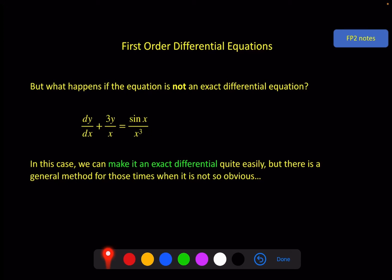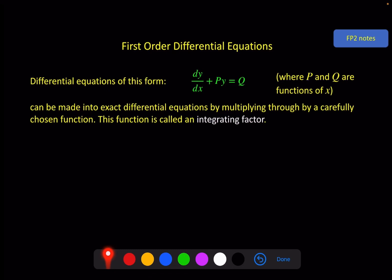You might be able to make it into an exact differential equation, though they won't all be this easy. What if it's not so obvious? There is a general method, and this is where we get to the integrating factor. This only applies to differential equations of this format: dy by dx plus p — where p is a function of x — times y equals q, where q is also a function of x. If your equation looks like this, or can be made to look like this, you can create an exact differential equation by multiplying through by a carefully chosen function called the integrating factor.